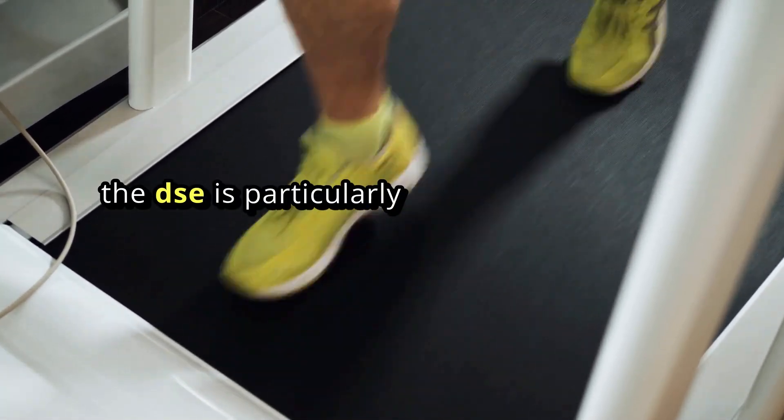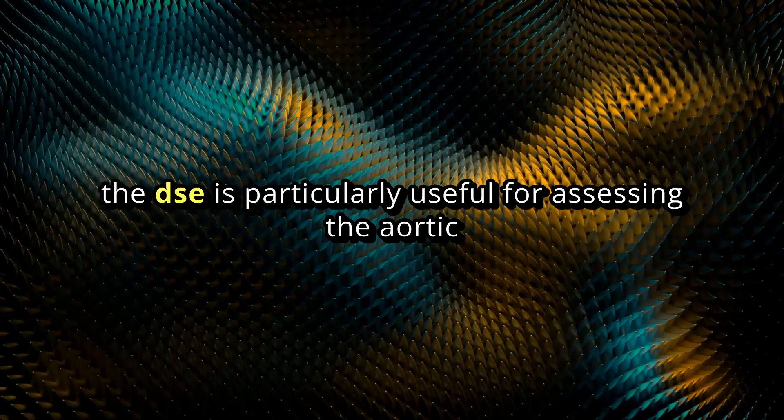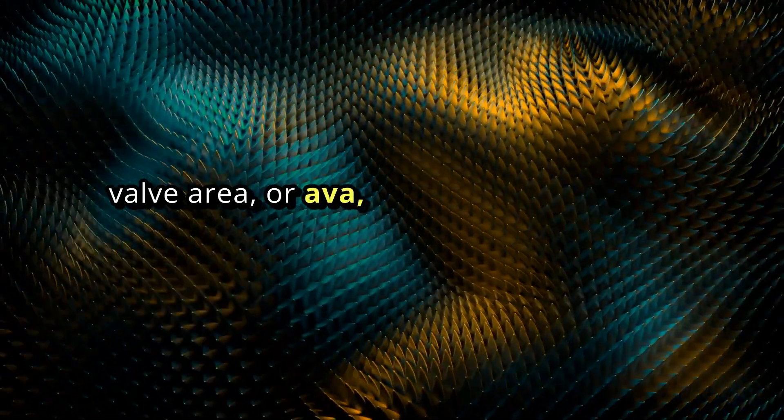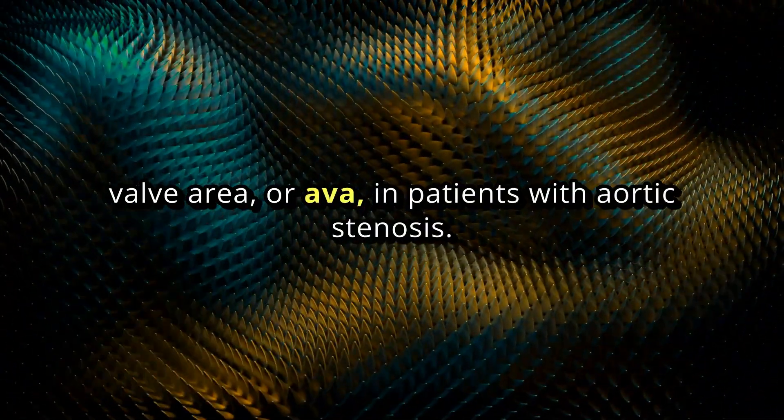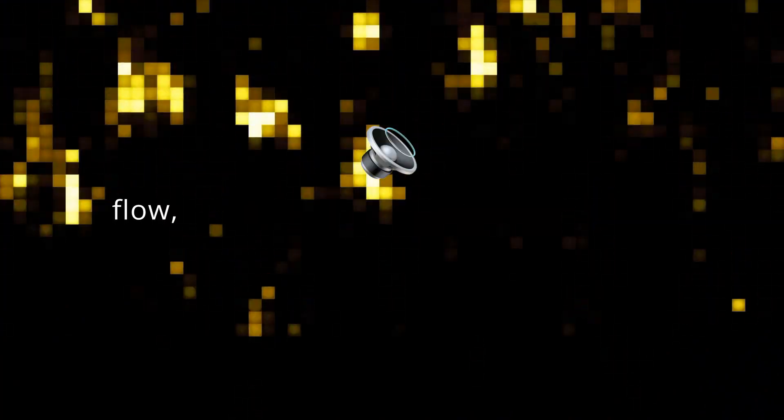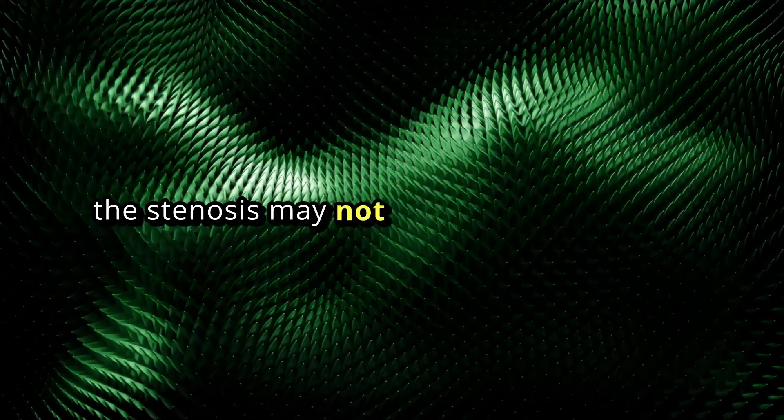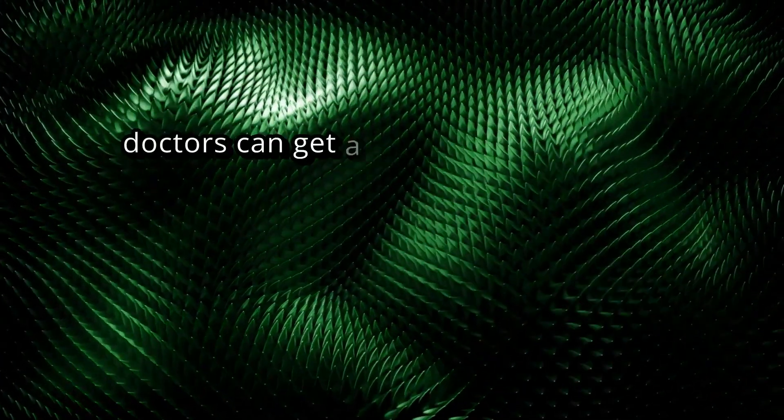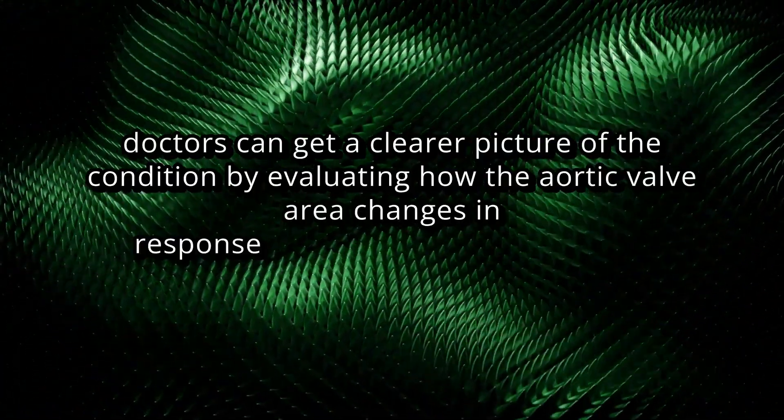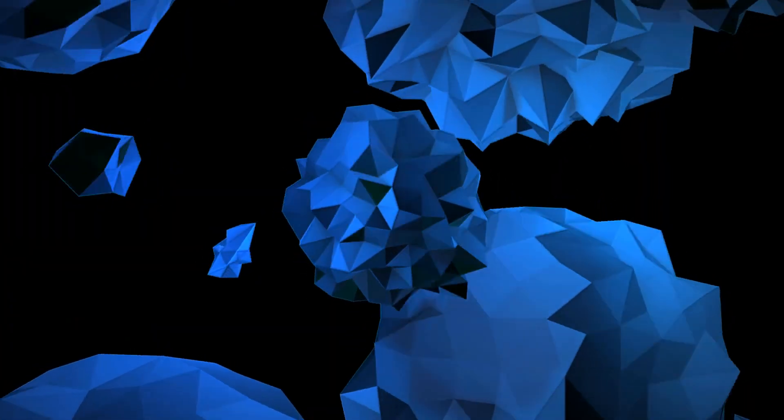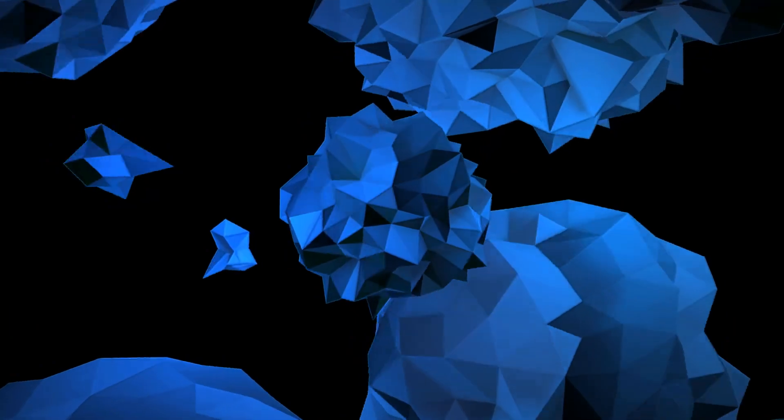The DSE is particularly useful for assessing the aortic valve area, or AVA, in patients with aortic stenosis. This is especially important in cases of low flow, low gradient AS where the severity of the stenosis may not be immediately clear. By evaluating how the aortic valve area changes in response to the increased workload induced by dobutamine, doctors can get a clearer picture of the condition.